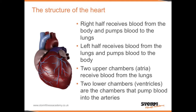We call the two upper chambers atria, or if we're referring to one of the chambers, we call it an atrium. The two upper chambers, the atria, receive blood from the lungs. The two lower chambers are called ventricles, and these are the chambers that pump blood into the arteries.